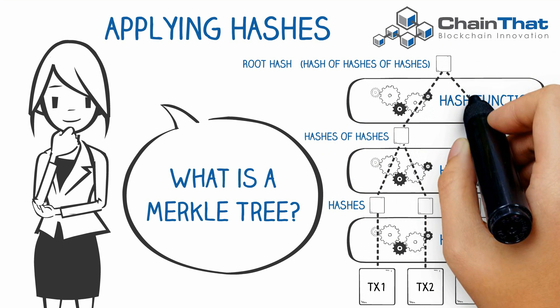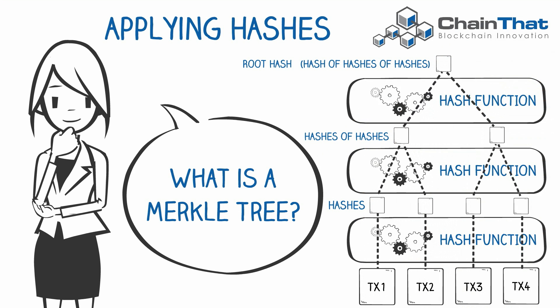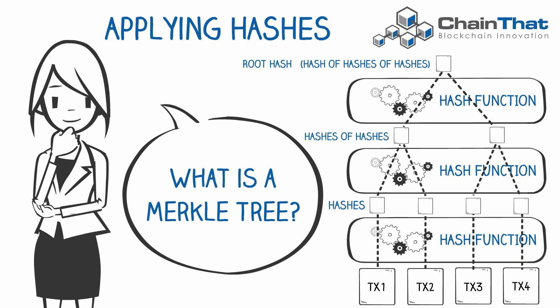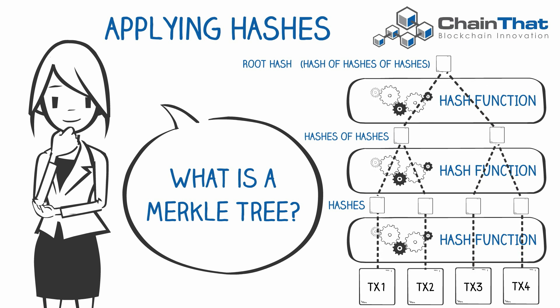The Merkle tree allows for the detection of any changes to any data within the transactions of a block by simply re-running through the process for each transaction and comparing the results to the original root hash.